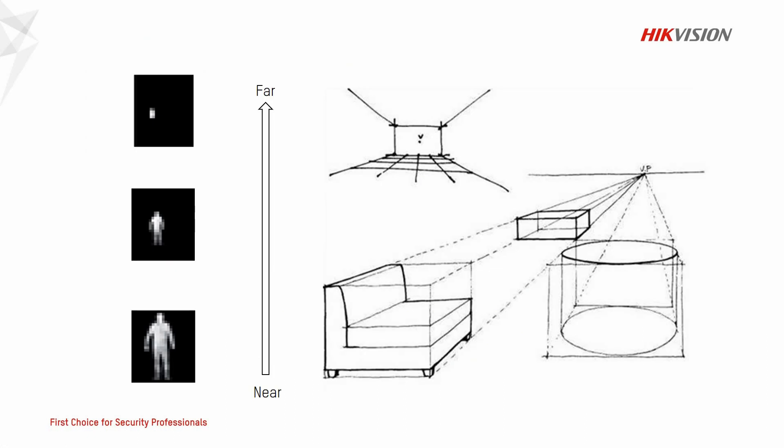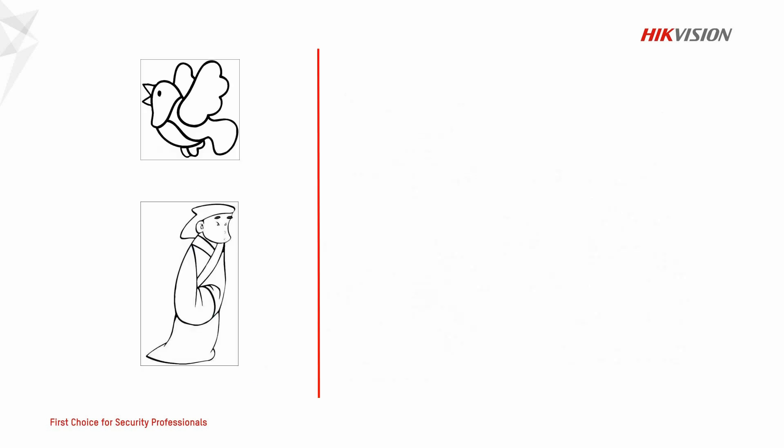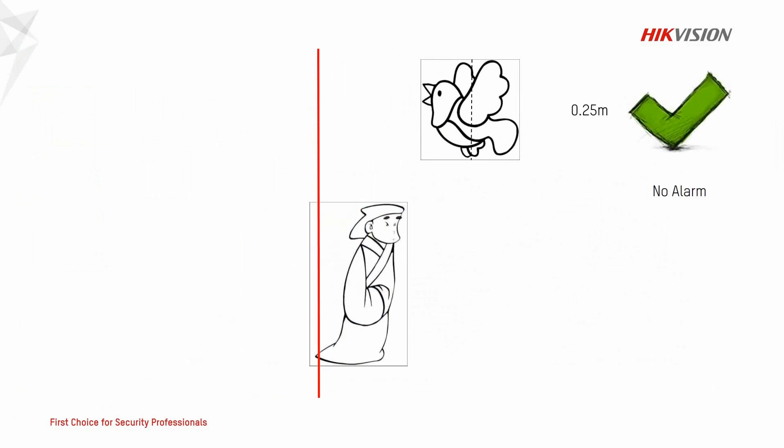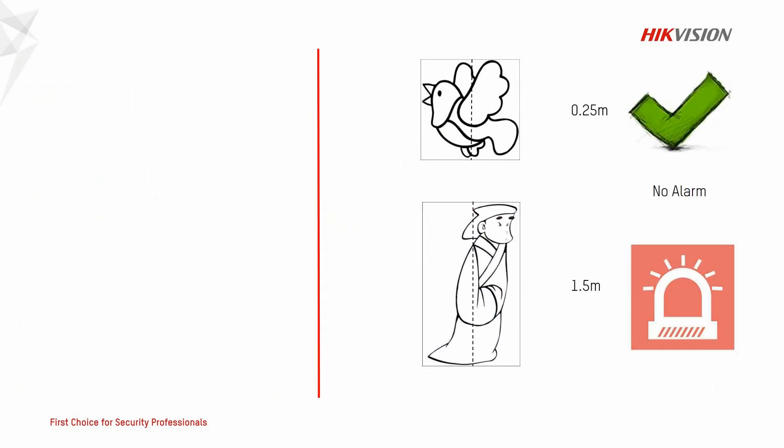An object may occupy different pixels in the same view due to close range or distance range. The false alarm filter algorithm may have poor performance for thermal cameras in distant range due to the limited pixels, so there may be too many false alarms of VCA events. After camera calibration, the device can calculate the real size of every target according to their pixels, so the VCA false alarm filter will be more accurate, and the filter can be accomplished by the target's actual size.